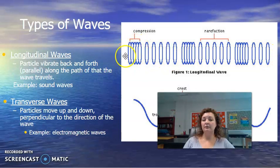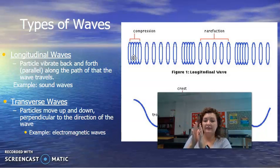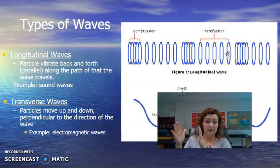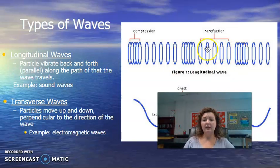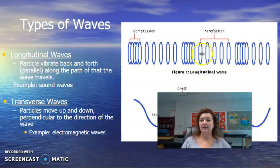These spots that are really close together are called compressions because my particles are all compressed together. And then it kind of springs back. And you can see this part that's all, my particles are separated out further. It's called a rarefaction. A really good example of a longitudinal wave is going to be sound waves. This is an example of a mechanical wave as well.